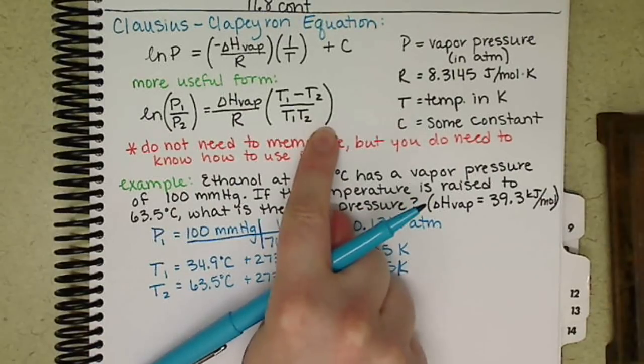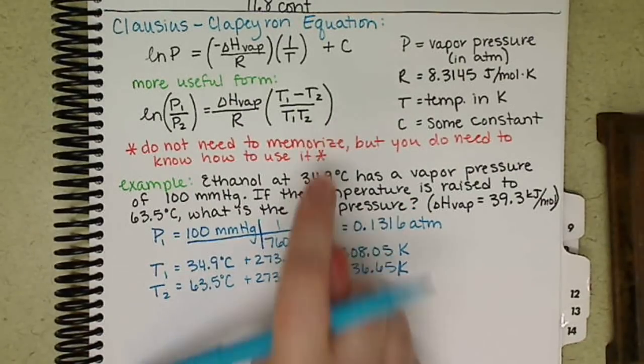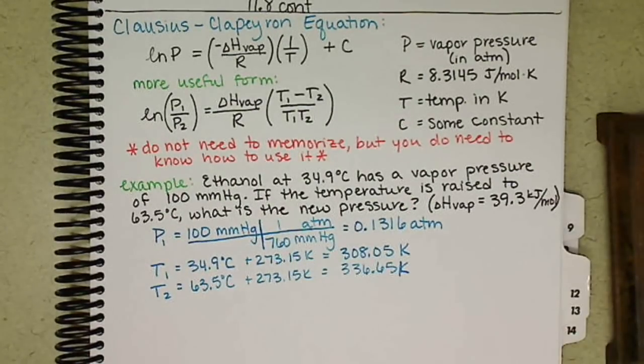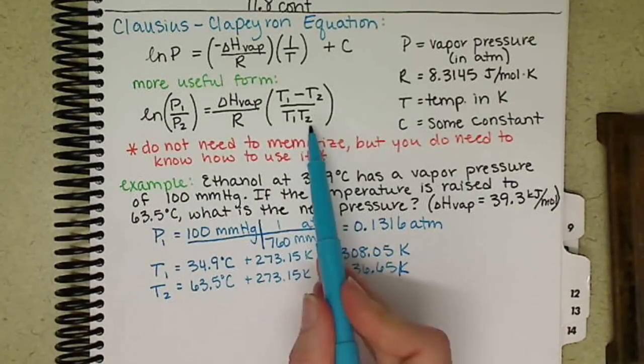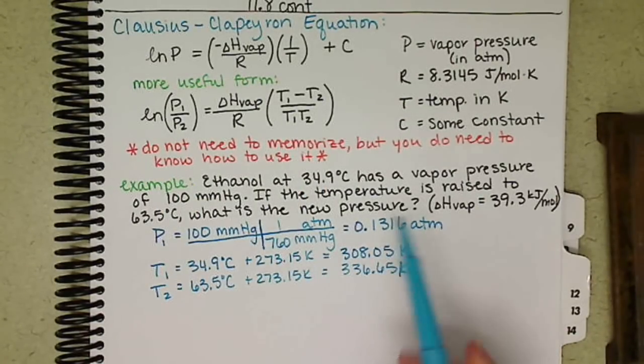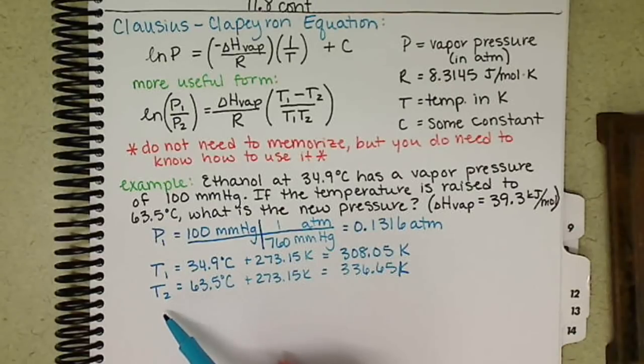Now I find with an equation like this, rather than solving for my unknown with symbols, I would rather just kind of simplify my numbers down and solve for my unknown. So I'm going to write my equation out plugging in my values for P1, T1, and T2.